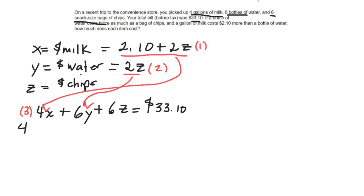So I got four times 2.10 plus 2Z, plus 6Y, and Y is 2Z, plus that 6Z. Kind of the whole key there is that you see that everything now is in terms of one variable.